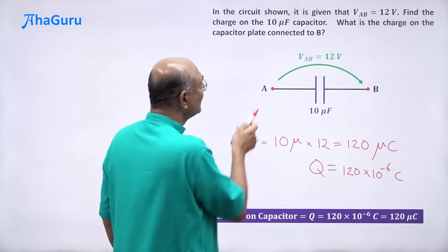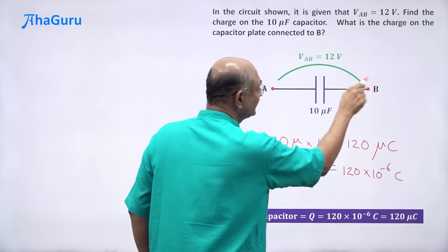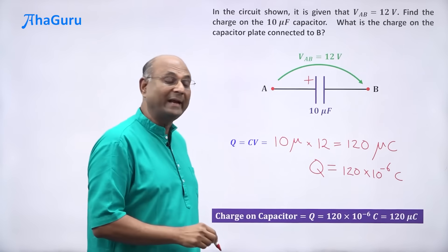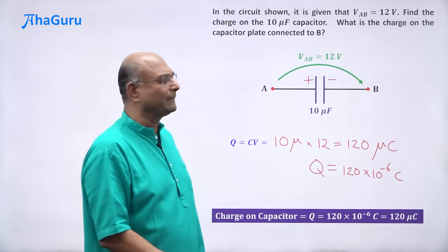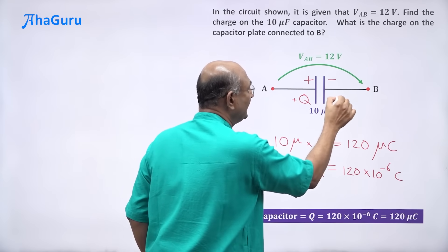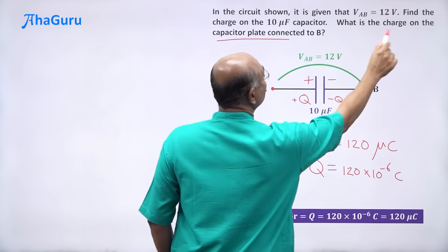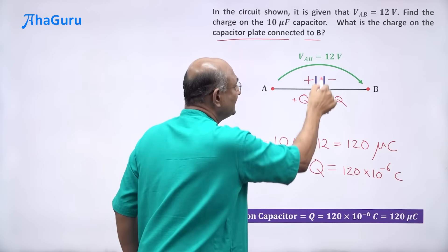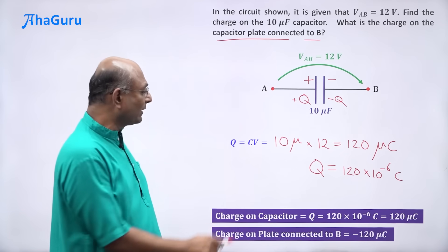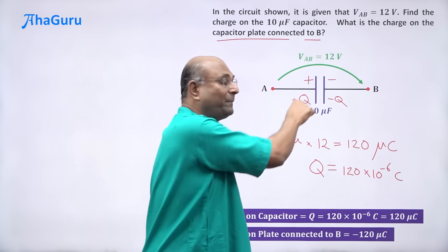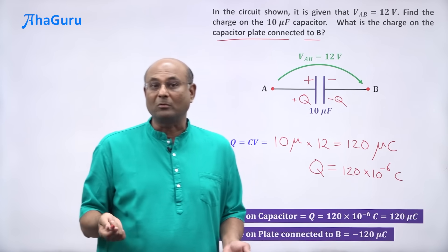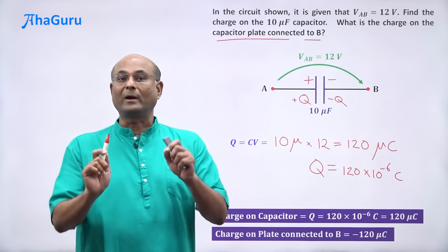Now, which plate will be positive? The potential drop is this way — this is at a higher potential, that is at a lower potential, so this must be the positive plate and that must be the negative plate. The charge here will be plus Q and the charge there will be minus Q. The question asks for the charge on the plate connected to B, so the answer is minus 120 microcoulombs. If they asked for the plate connected to A, the answer would be plus 120 microcoulombs. But if they ask for the charge on the capacitor, you always give the positive value: 120 microcoulombs.